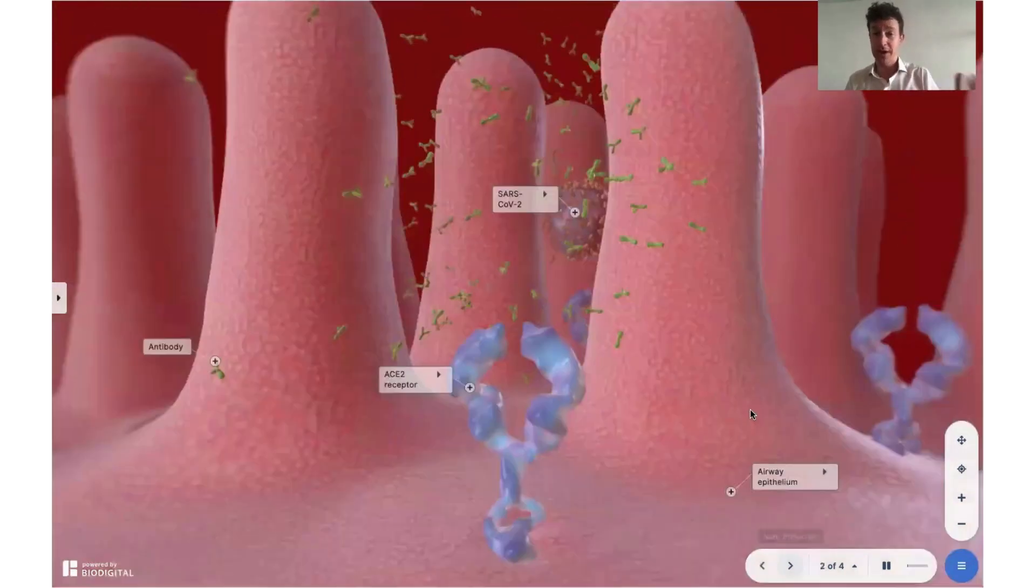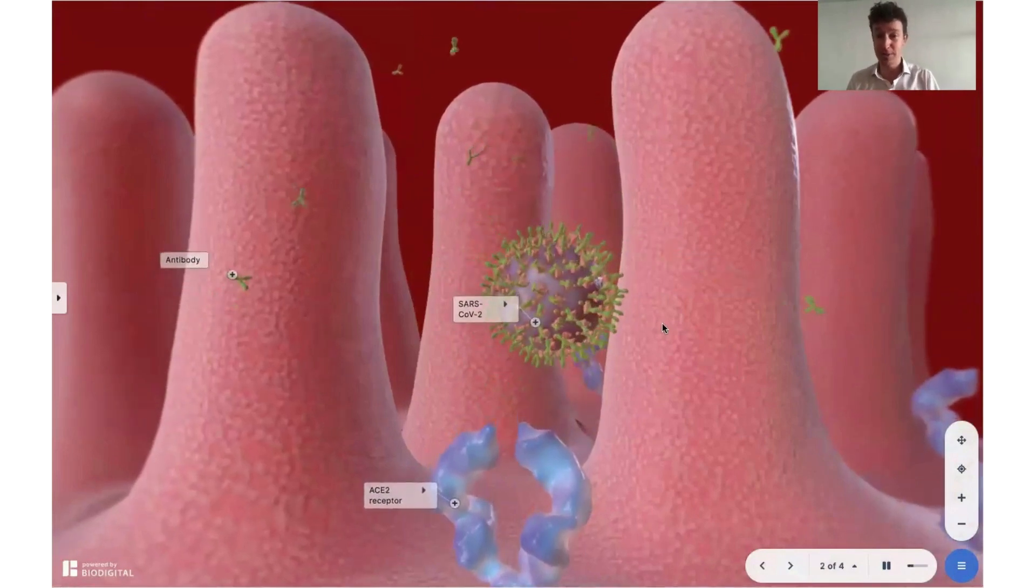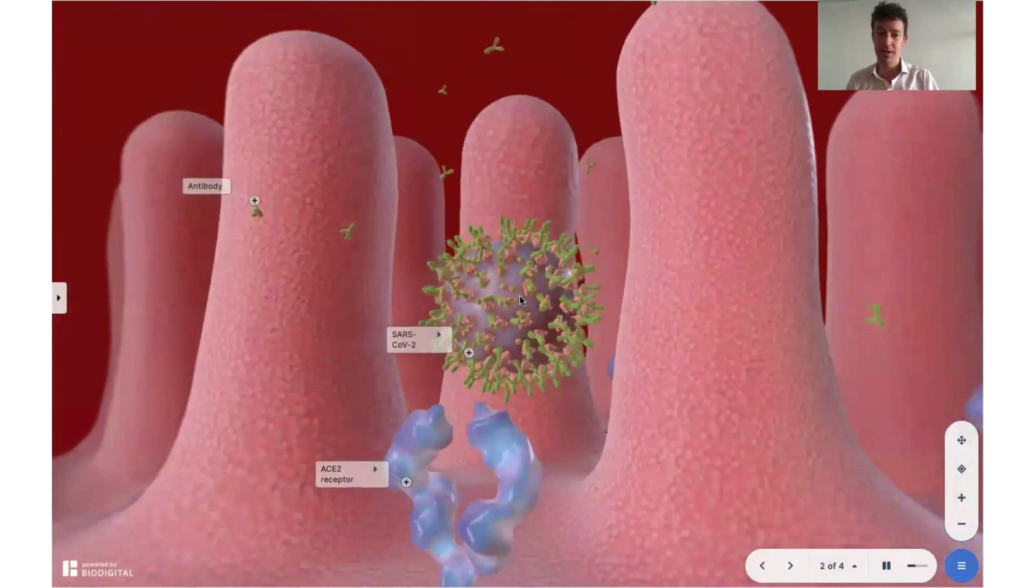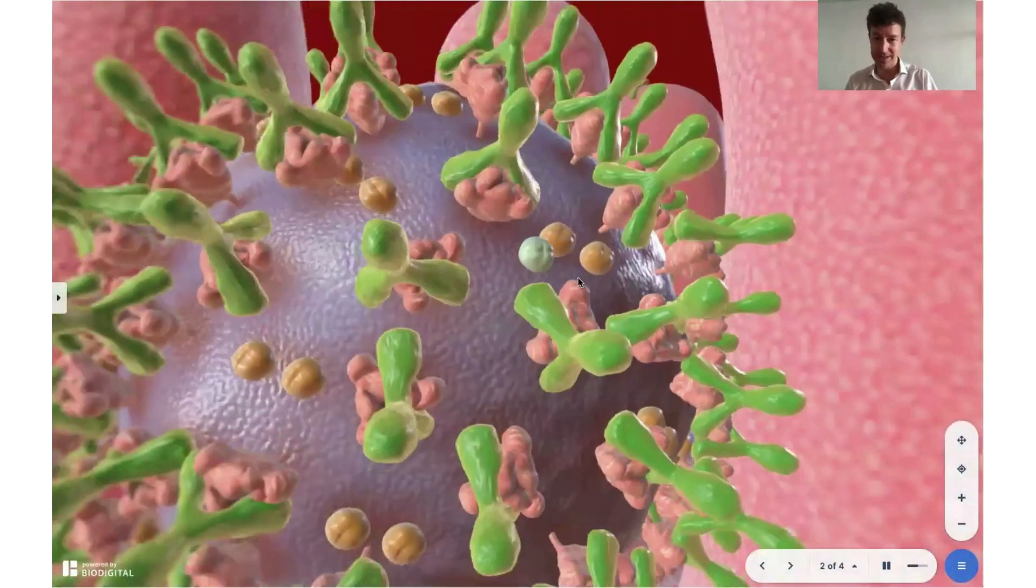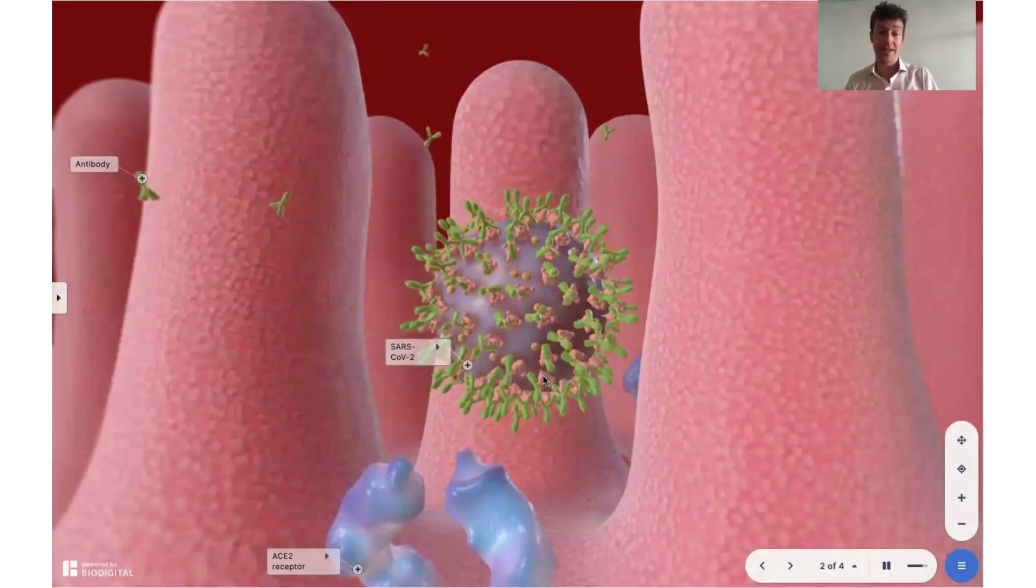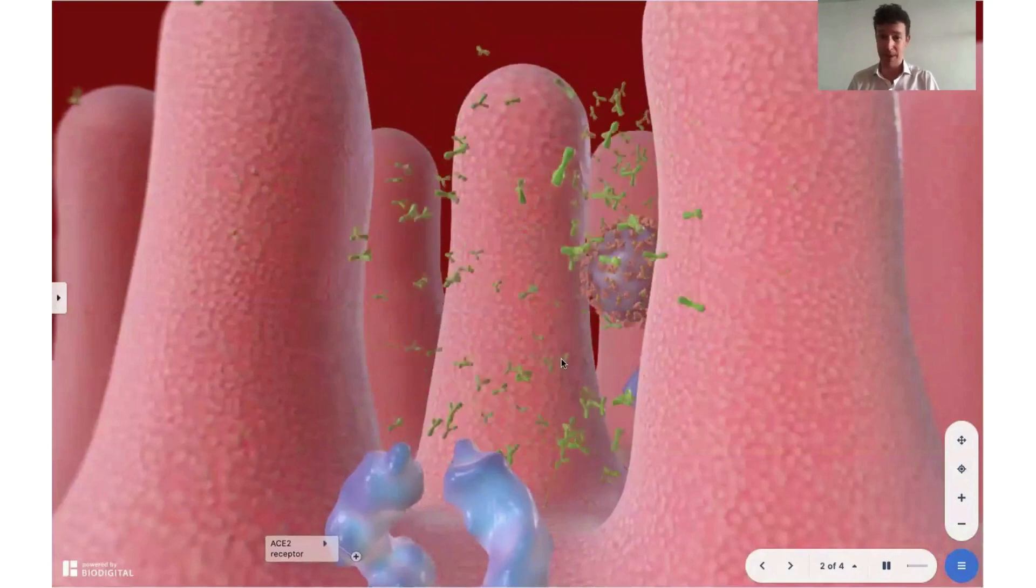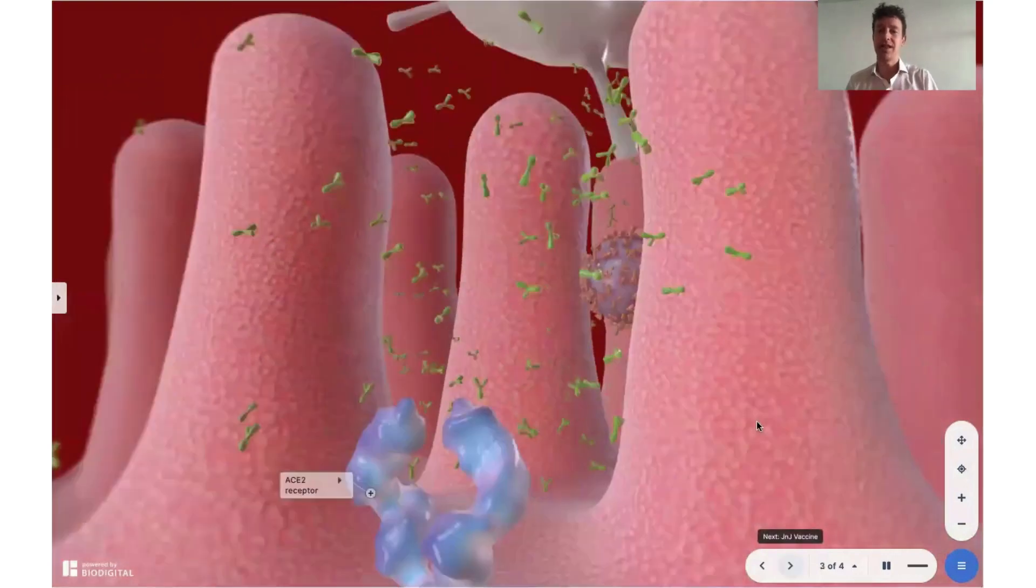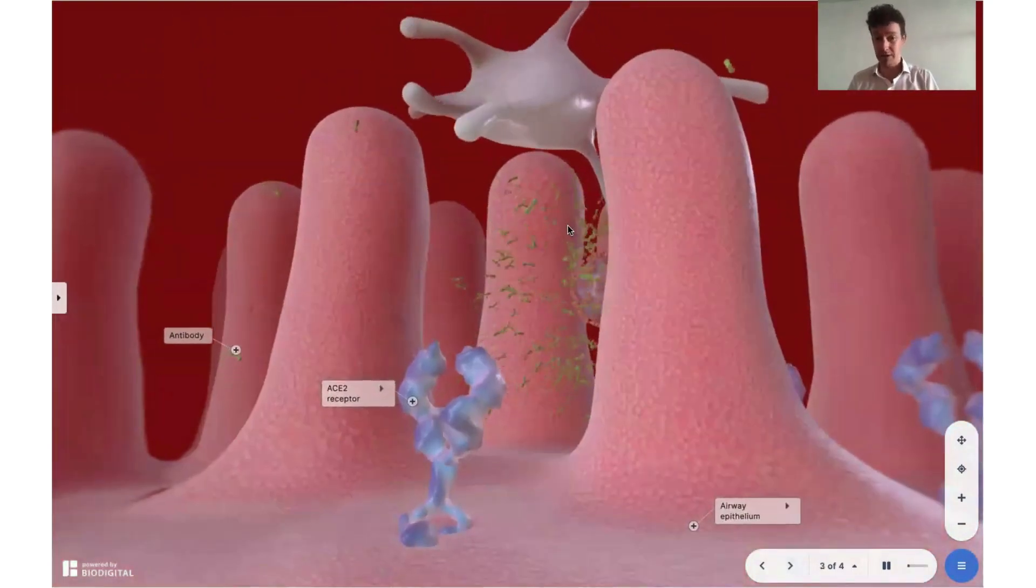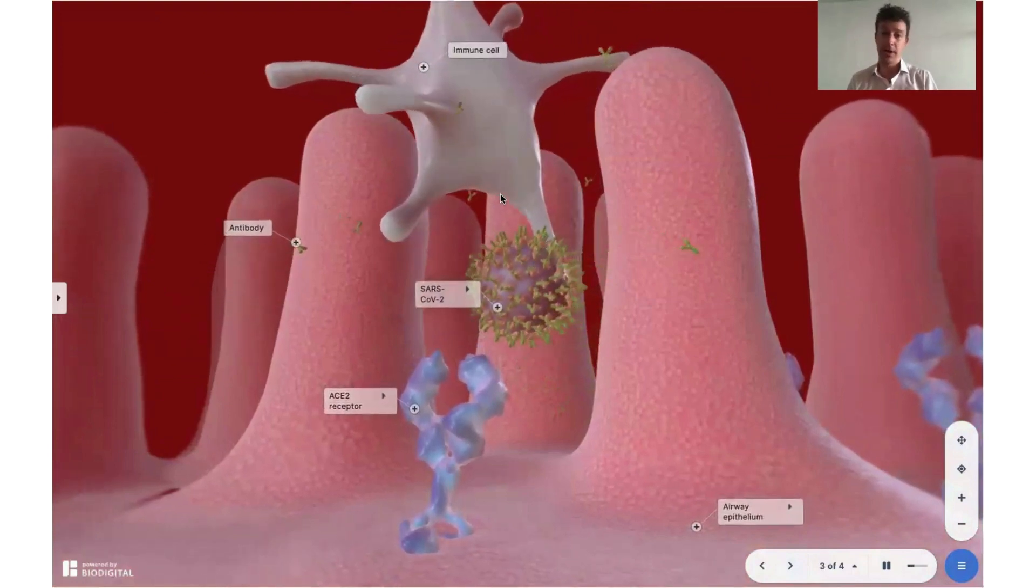So how do vaccines work? Well, long story short is they encourage your immune system to make antibodies against the virus. And these antibodies, these green things, they stick to the spike proteins, which has a couple of effects. It means that the spike proteins have a difficult job of attaching to the ACE2 receptor. You'll see there, it just bounced off. And the other thing is that they tag the virus for degradation by the immune system, so that immune cells like this gobble them up and destroy them.